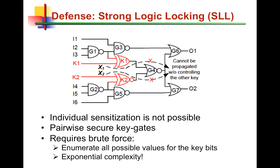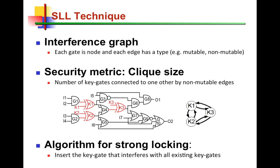This is the main idea behind the defense — it protects against sensitization attack, and can be implemented in an iterative fashion. We have developed a security metric related to the size of a clique in a graph. We create an interference graph that shows whether the inserted key gates interfere with each other. The idea is to maximize key gate interference in a pairwise fashion, meaning we maximize the clique size in the interference graph. In this example, all three key gates interfere with each other, resulting in a clique of size 3. Ideally, if inserting 100 key bits, all 100 should interfere pairwise, giving 100-bit strength against sensitization attack.